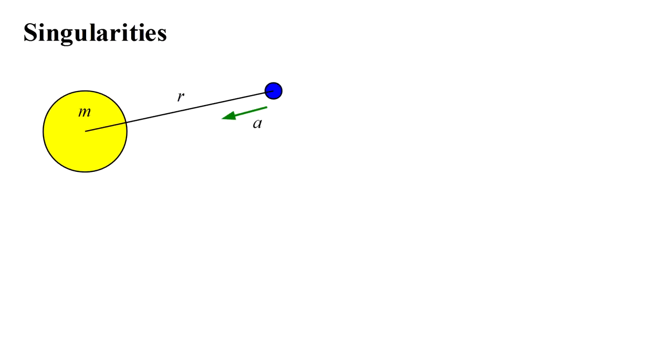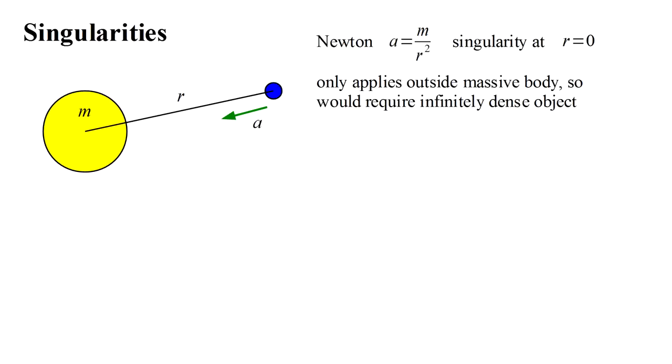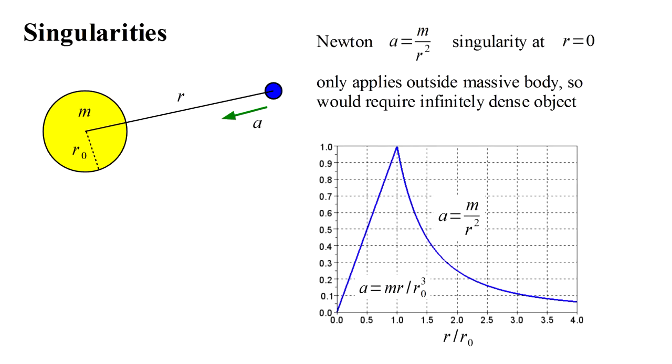In the Newtonian expression for acceleration, a equals m over r squared, there is seemingly a singularity at r equals zero, because one over zero blows up to infinity. But the formula only applies outside the body, so this would only be a problem for an infinitely dense body, that is, one compressed all the way down to zero radius. The theory for a finite sized body looks like this plot. Outside the body's radius, gravity varies as m over r squared, but inside it actually decreases down to zero at r equals zero. If you could drill a shaft to Earth's center, you'd find no gravity there. In Newtonian theory, there are no singularities for objects of finite density.